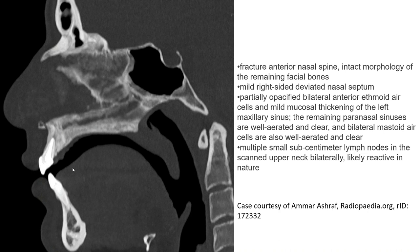Bilateral mastoids are also clear. Multiple small sub-centimeter lymph nodes in the upper neck bilaterally are likely reactive in nature.